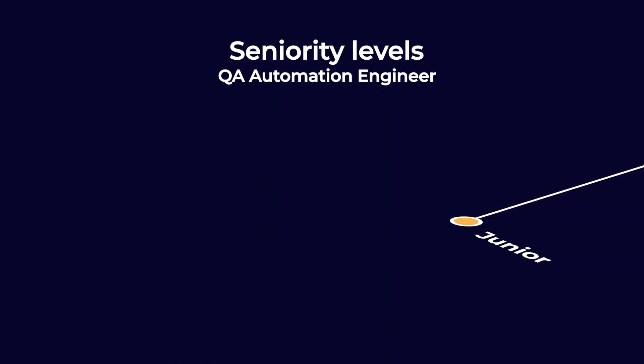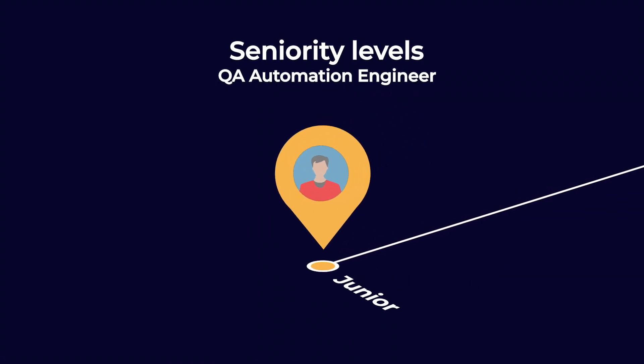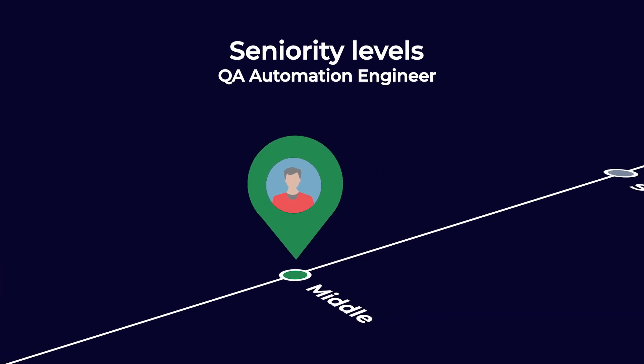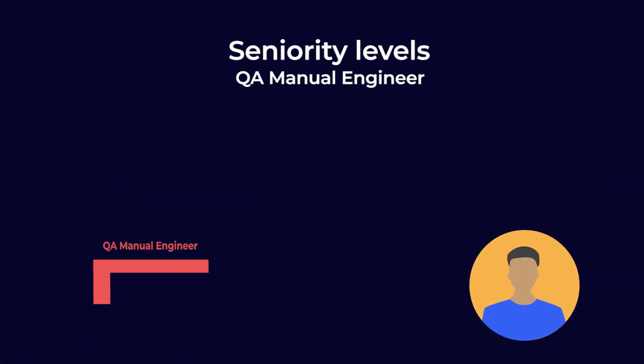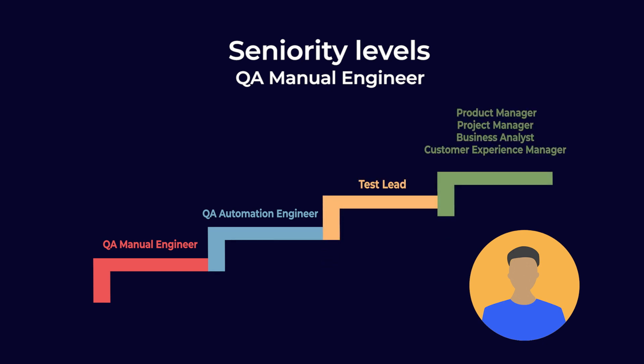Seniority level: QA automation engineers have the same seniority levels as software developers — junior, middle and senior. As for QA manual engineers, it is rare to find senior manual testers. They often acquire programming skills and become QA automation engineers, or move up to management positions such as test lead, product manager, project manager, business analyst, customer experience manager, etc. A project has little chance of success if the testing processes are entrusted to junior QA engineers. Time is needed to gain practical experience and enhance technical breadth. Therefore, an efficient tester needs at least three years of relevant experience.